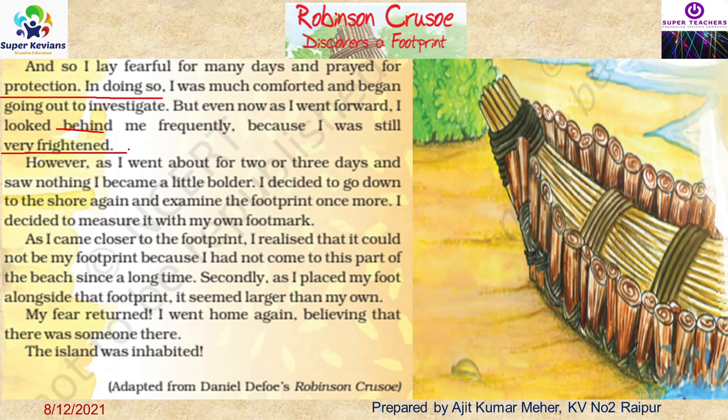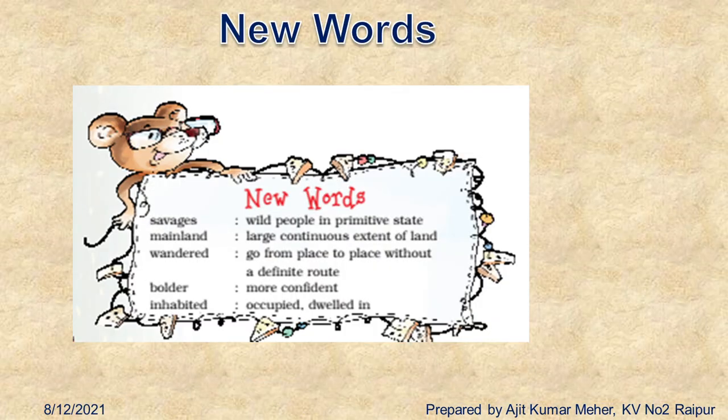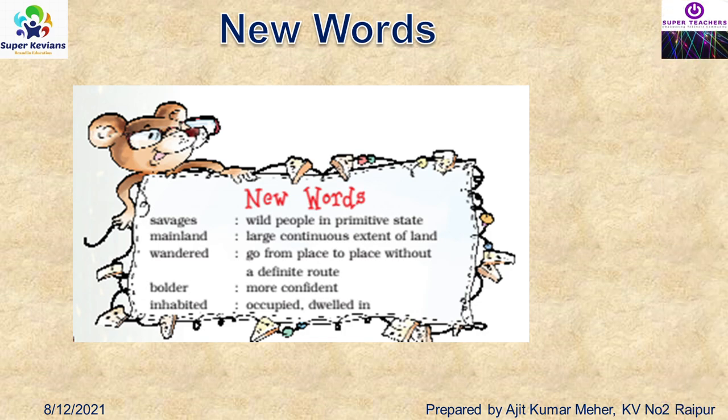Now for vocabulary: savages means wild people. Mainland means a large continuous extent of land. Wander means to go from place to place without a definite route — moving here and there. Bolder means more confident. Inhabited means occupied or dwelled in — someone is there, someone has occupied that place.